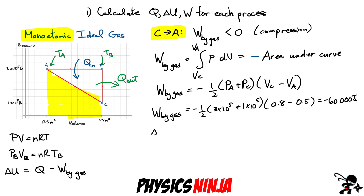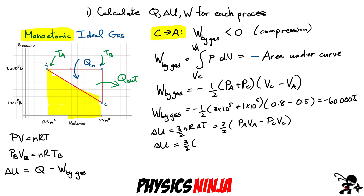Next, the change in internal energy: ΔU = (3/2)(P_A·V_A − P_C·V_C). Substituting: (3/2)[(3×10⁵)(0.5) − (1×10⁵)(0.8)]. It's not immediately obvious whether this will be positive or negative, but doing the math gives a positive value of 105,000 joules.